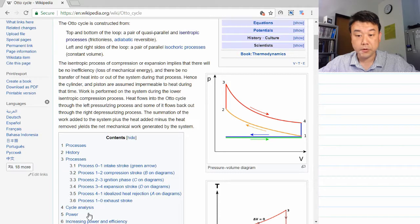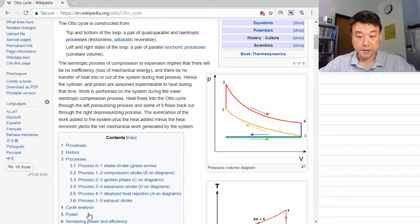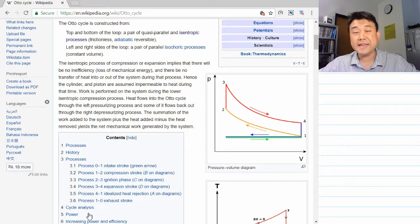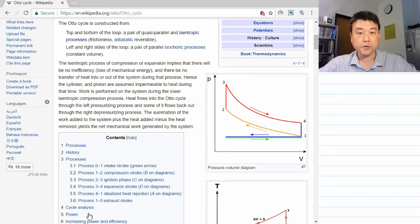At point 2, this is the very important point. This is where the fuel air is ignited with an electric spark. So this happens quickly enough that the volume doesn't have any time to change. So this is idealized with isochoric heating.